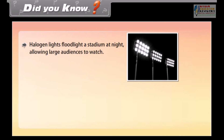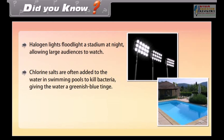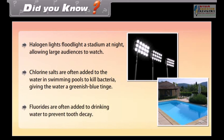Halogen lights floodlight a stadium at night, allowing large audiences to watch. Chlorine salts are often used in swimming pool water to kill bacteria, giving the water a greenish-blue tinge. Fluorides are often added to drinking water to prevent tooth decay.